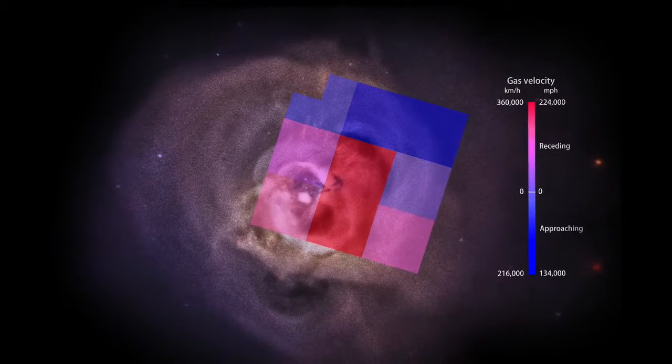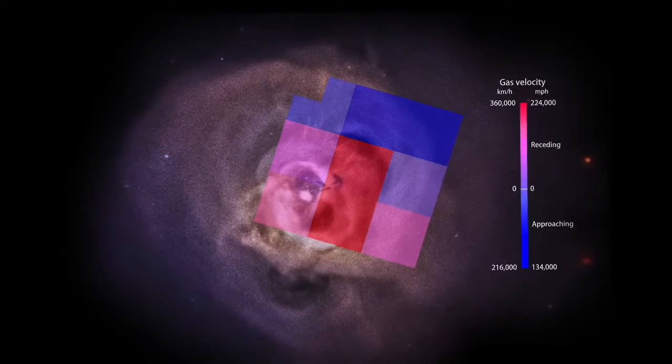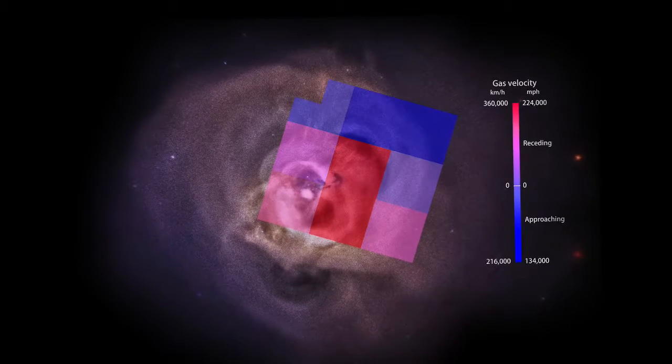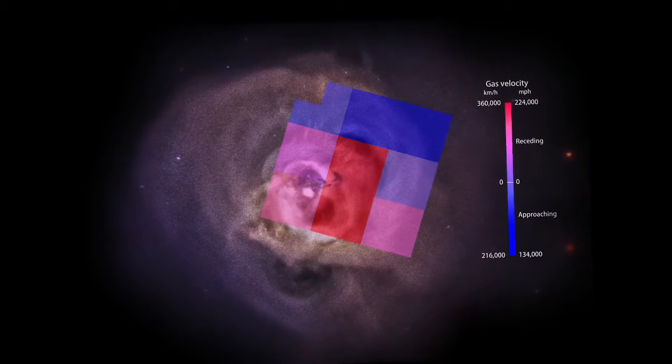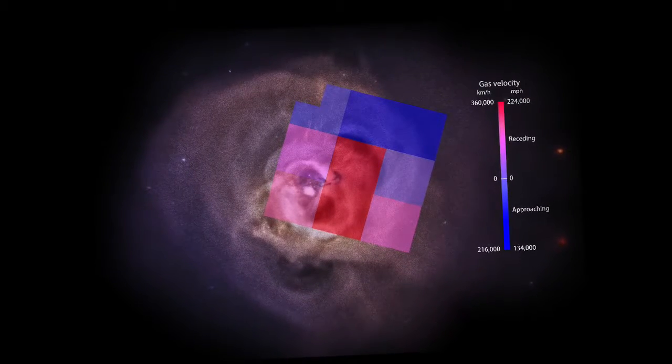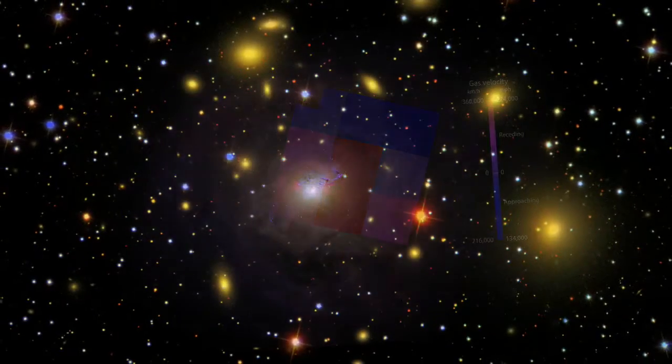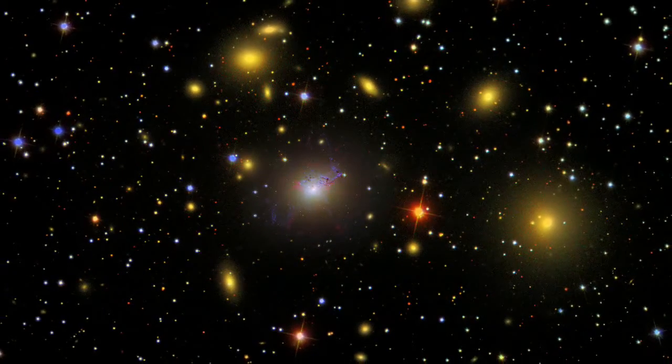This is actually surprisingly slow when you consider that the gas is continually stirred by bubbles blown out from the active galaxy. The spectrum also reveals contradictions with current models of how hot plasma emits X-rays that astronomers will work to resolve.